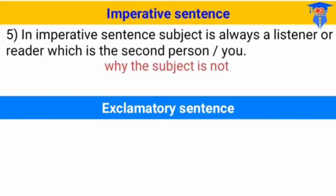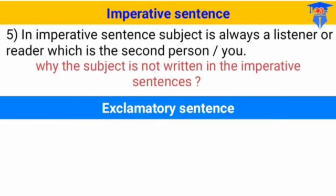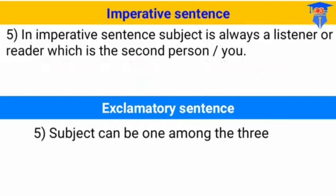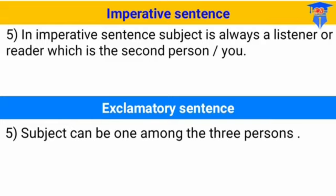For the subject of an imperative sentence, it is always the listener or reader — si pendengar ataupun si pembaca — so the meaning is already understood. For example: 'Please take the book' — langsung dimengerti bahwa yang disuruh adalah si dia. But for exclamatory sentence, the person is mentioned, and the subject can be more than one.